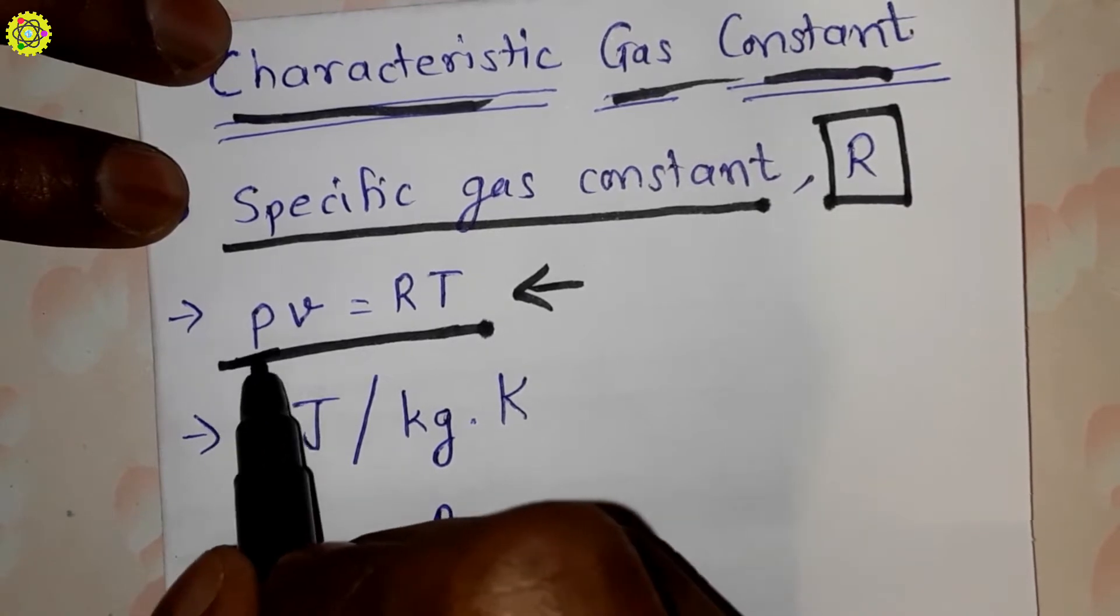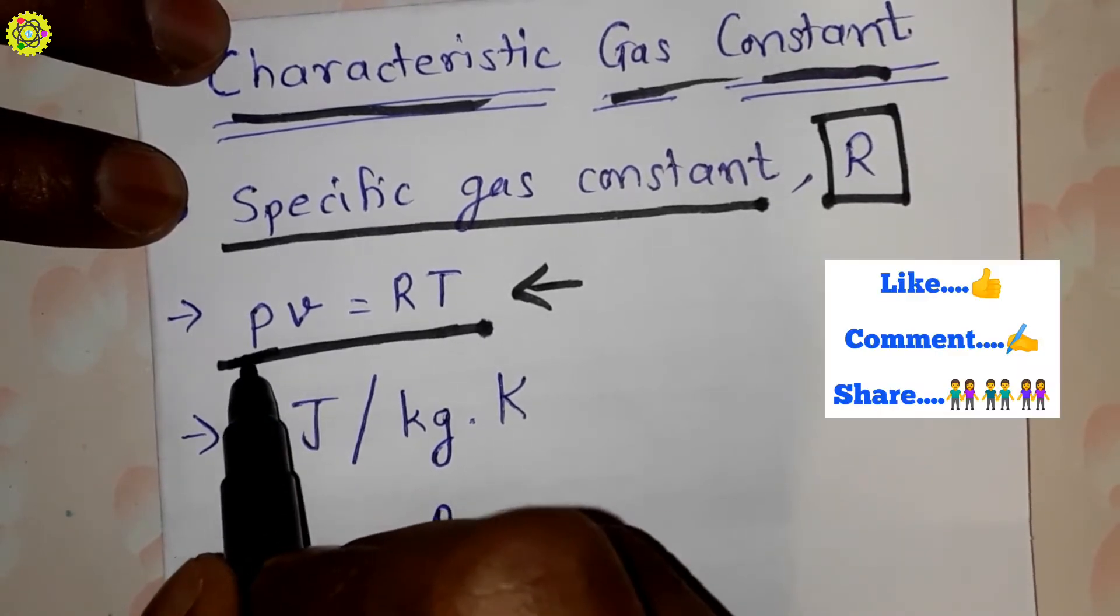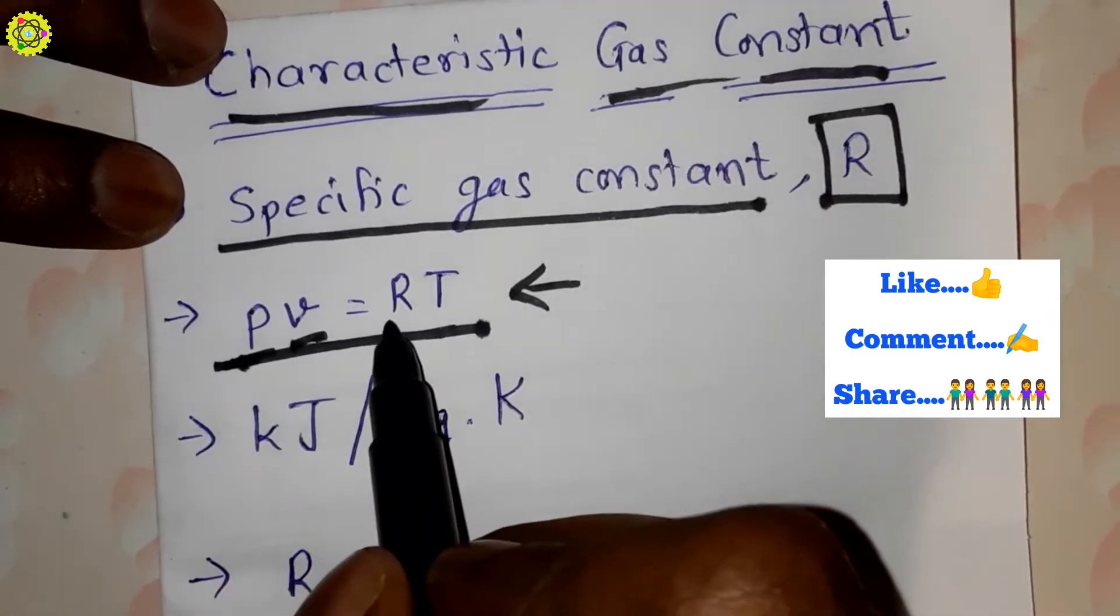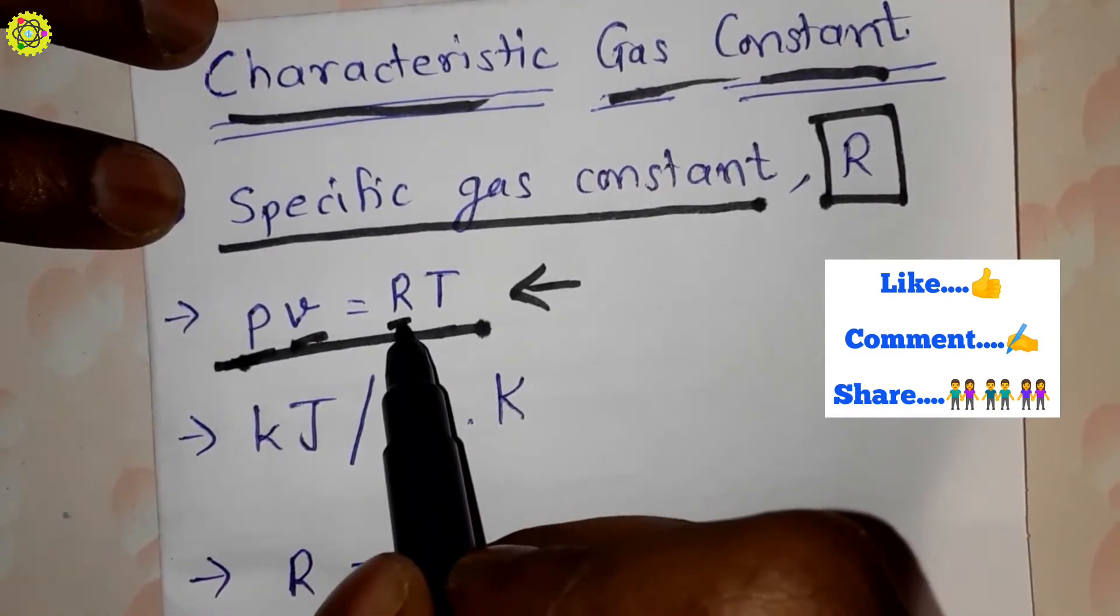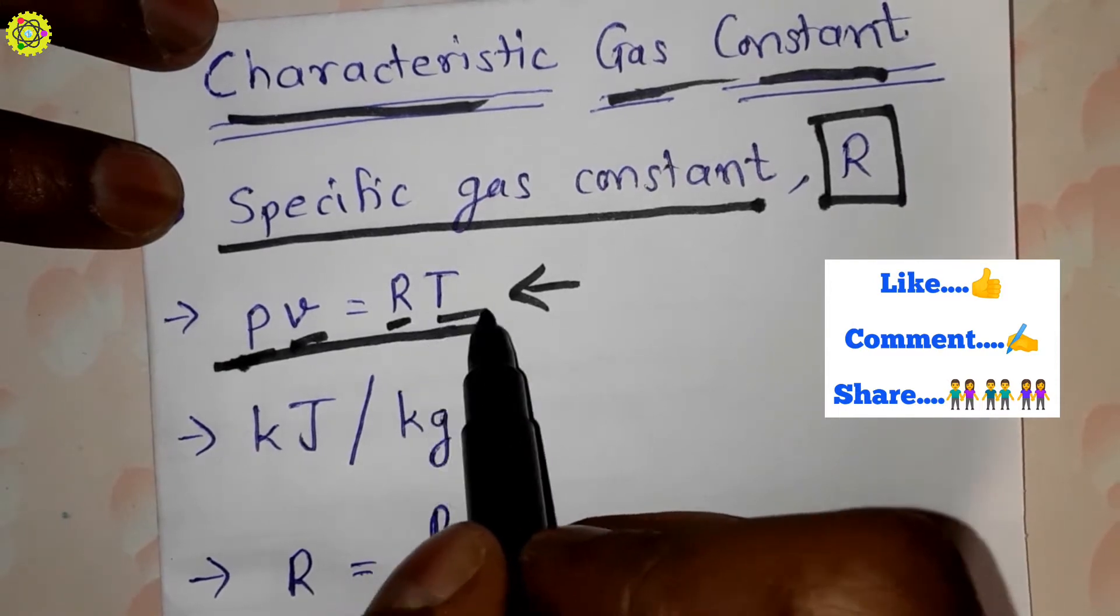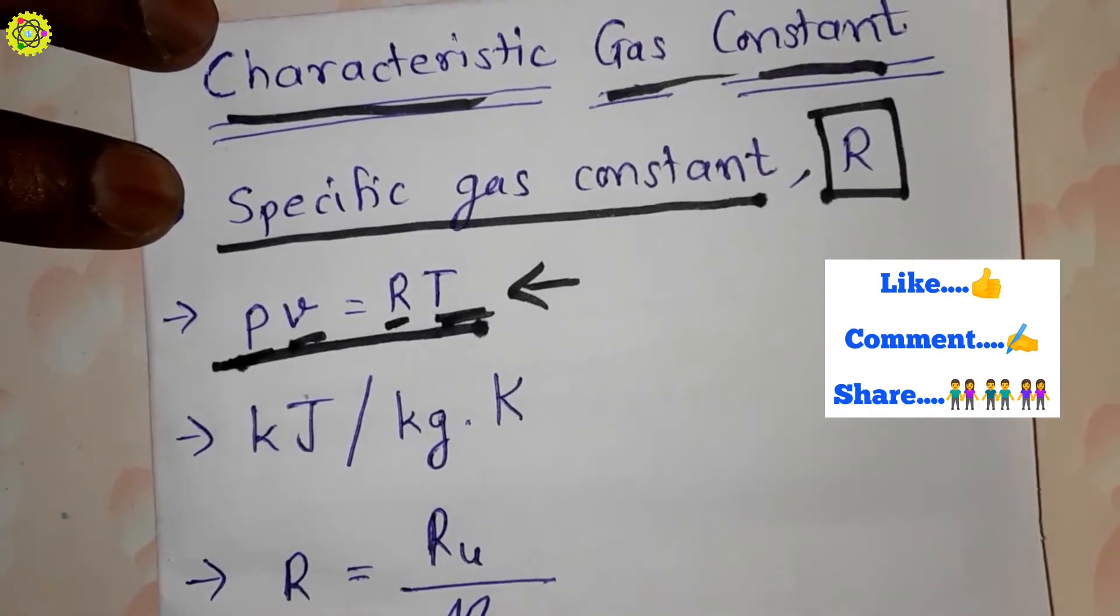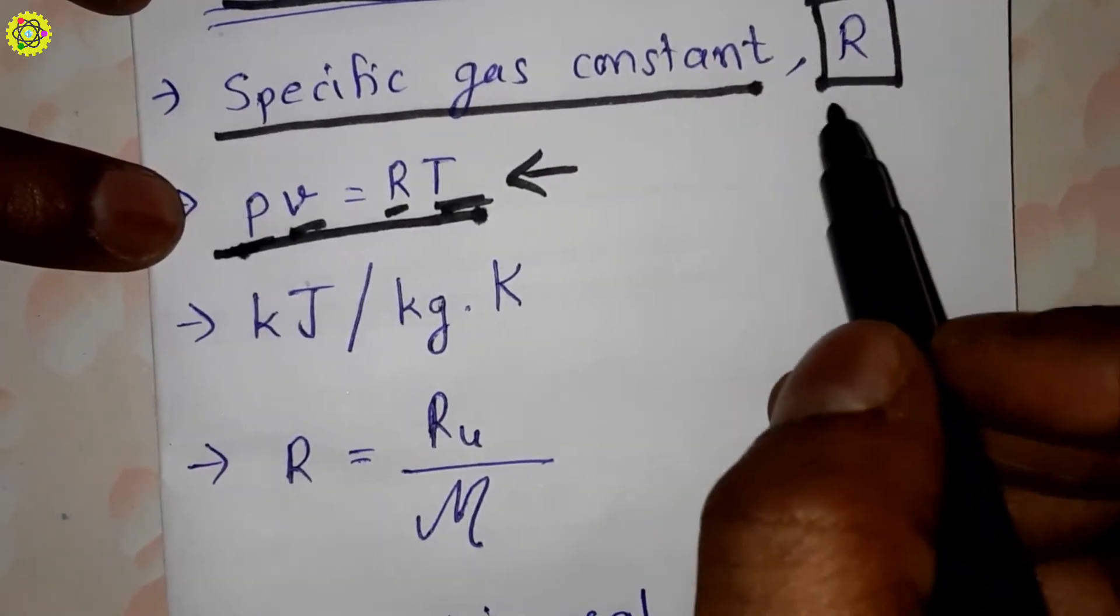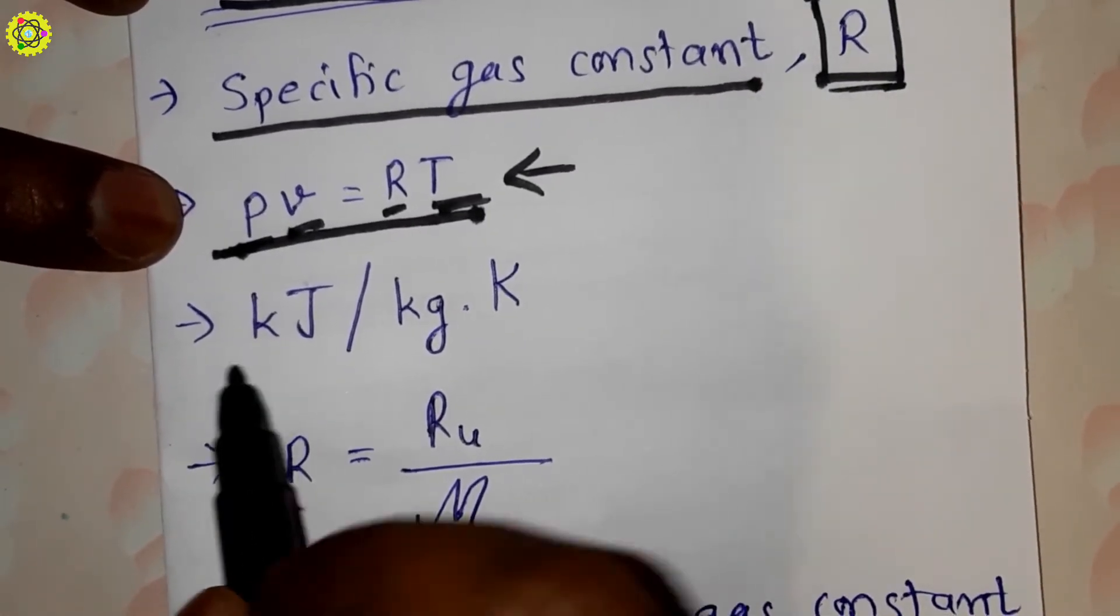P is absolute pressure, small v is specific volume, R is characteristic gas constant, and capital T is absolute temperature. Now, this specific gas constant R is measured in